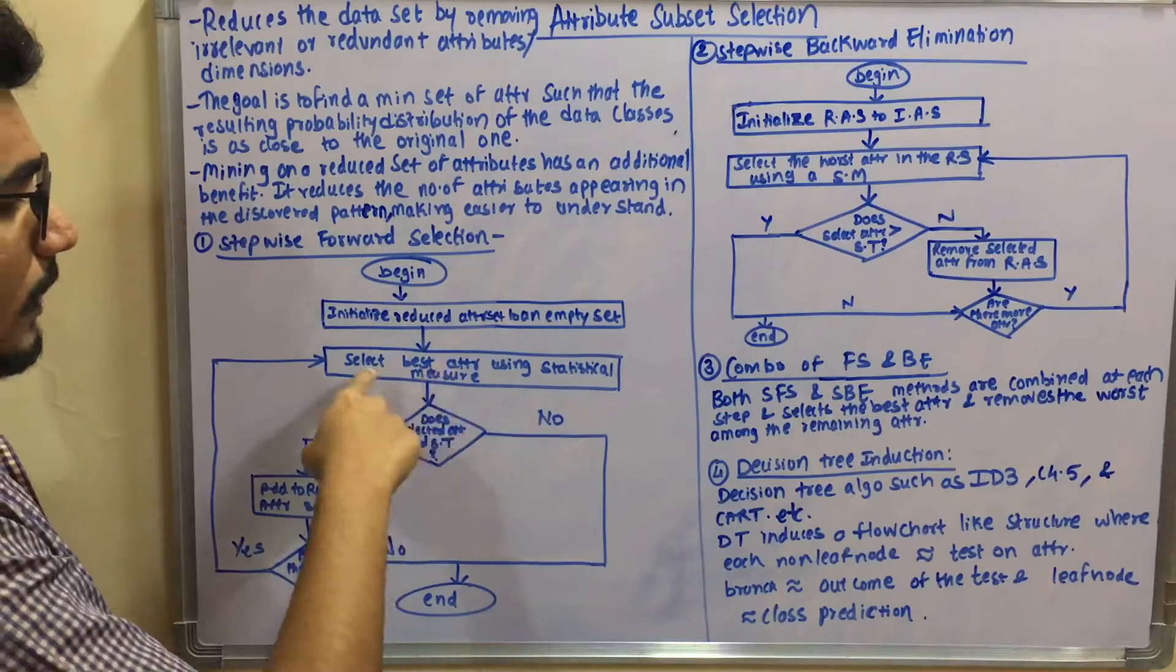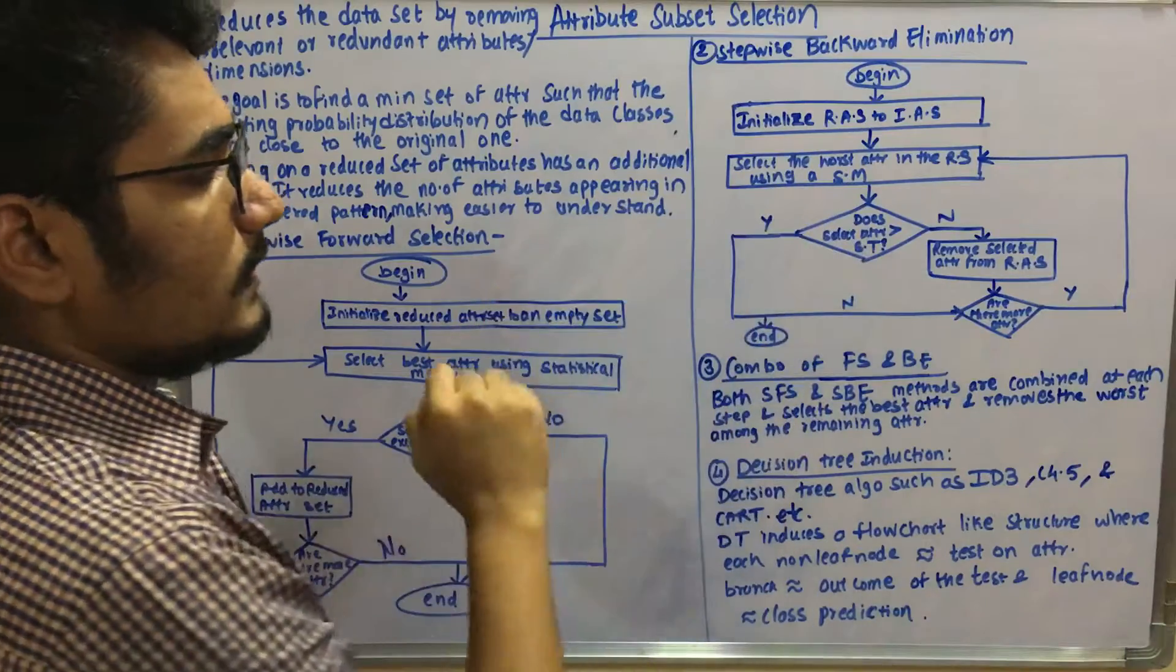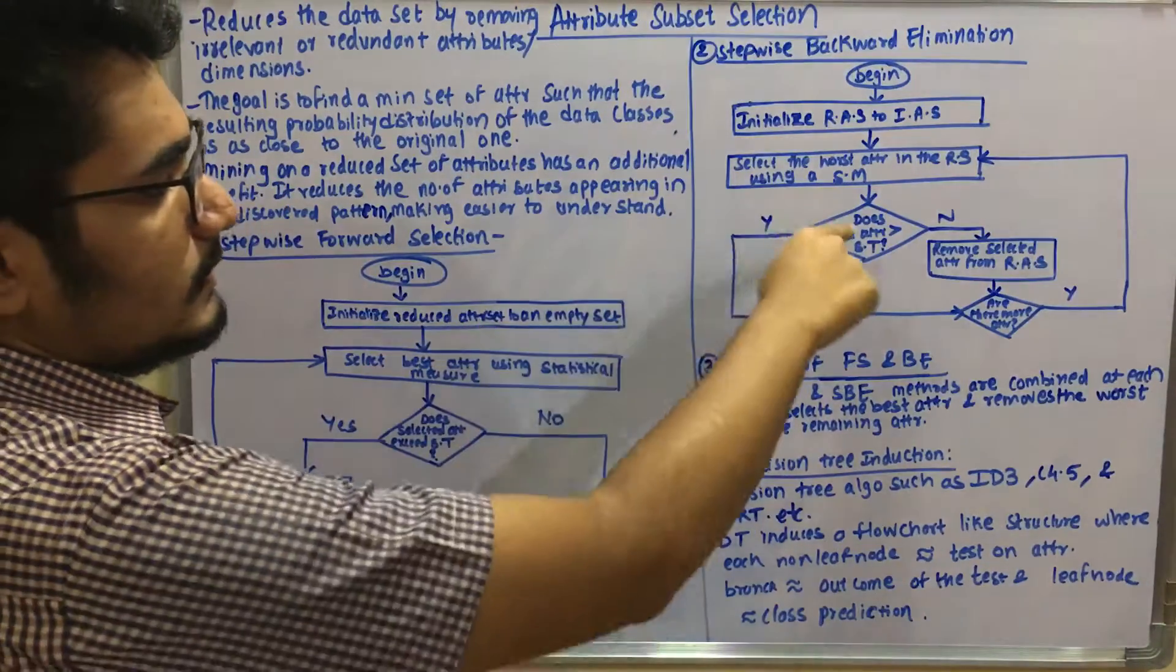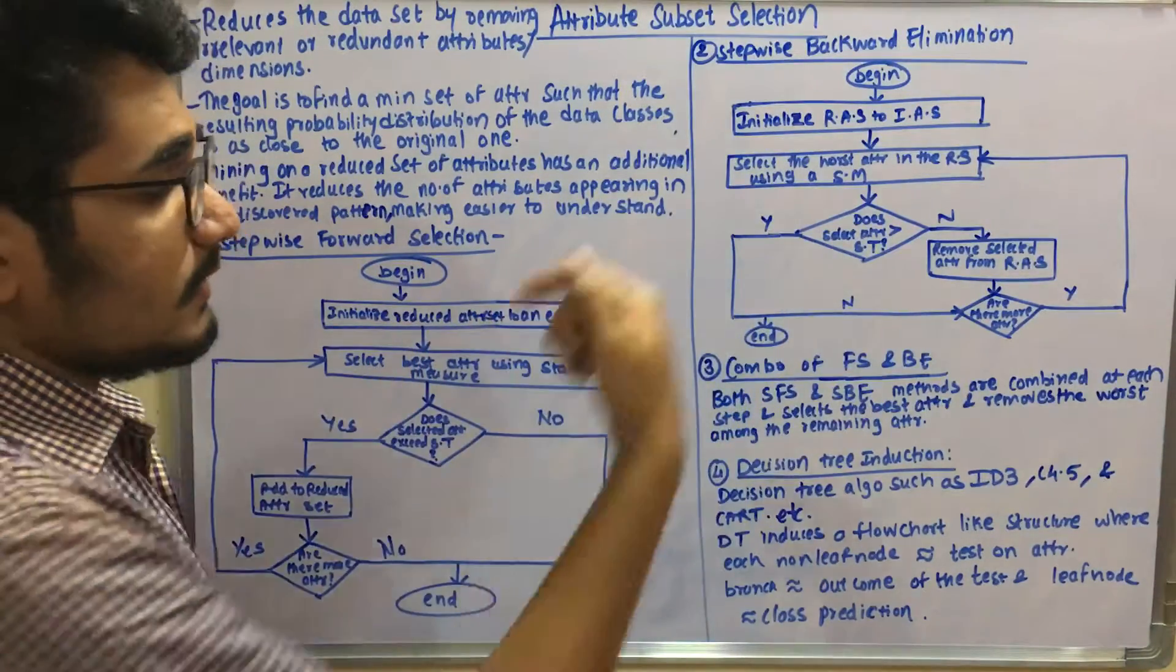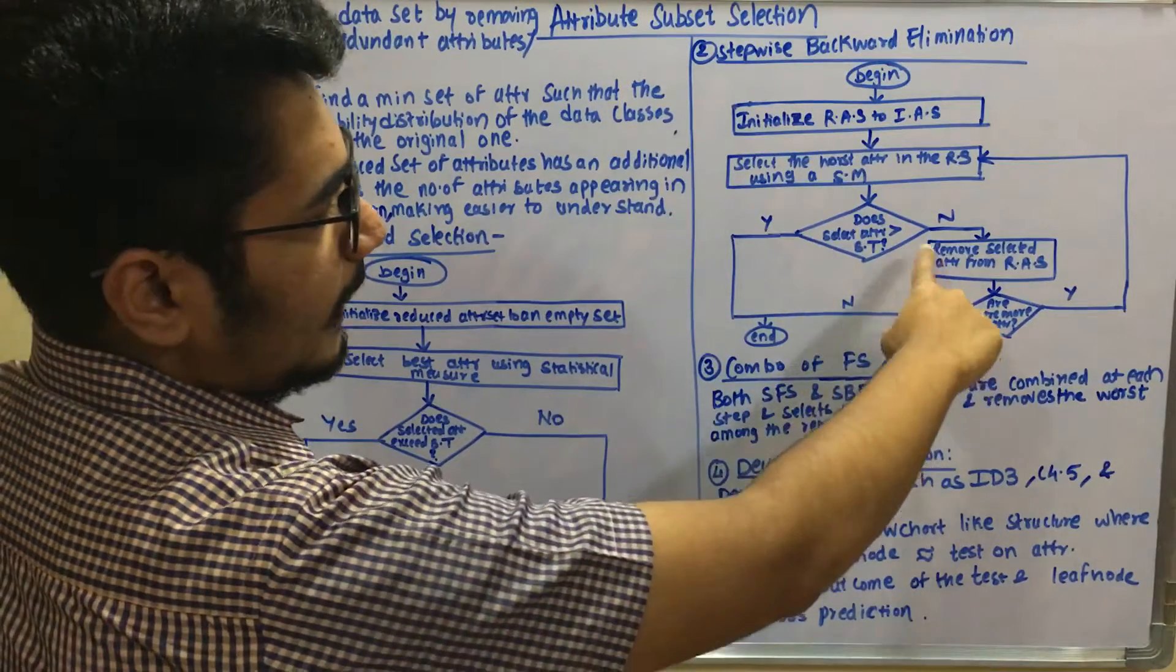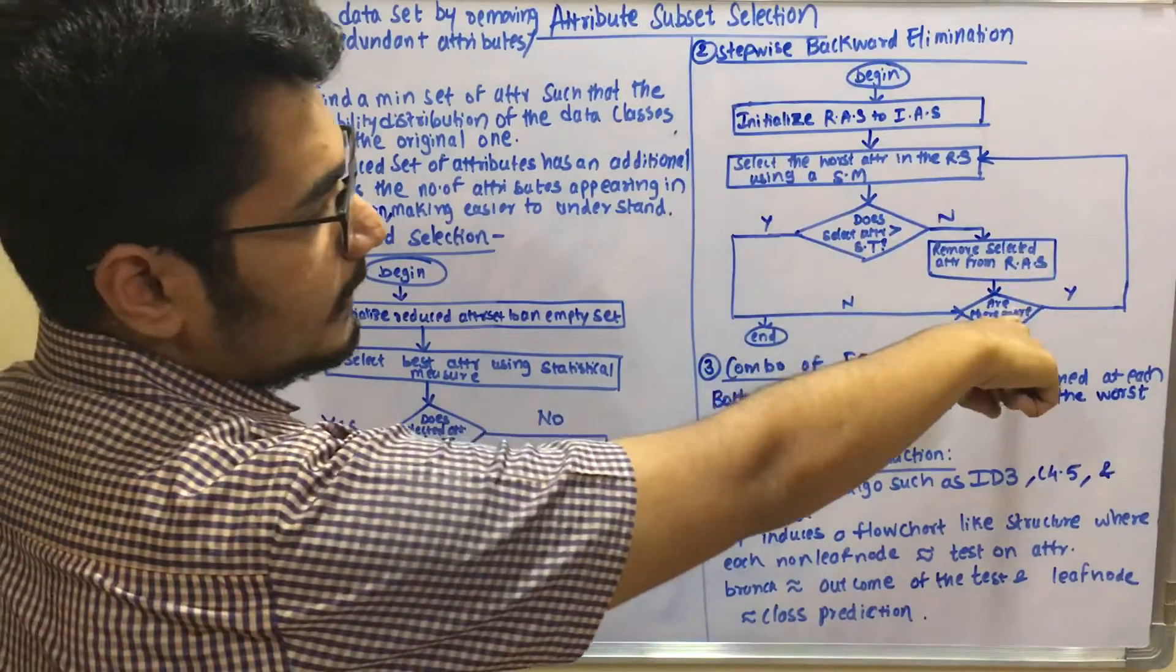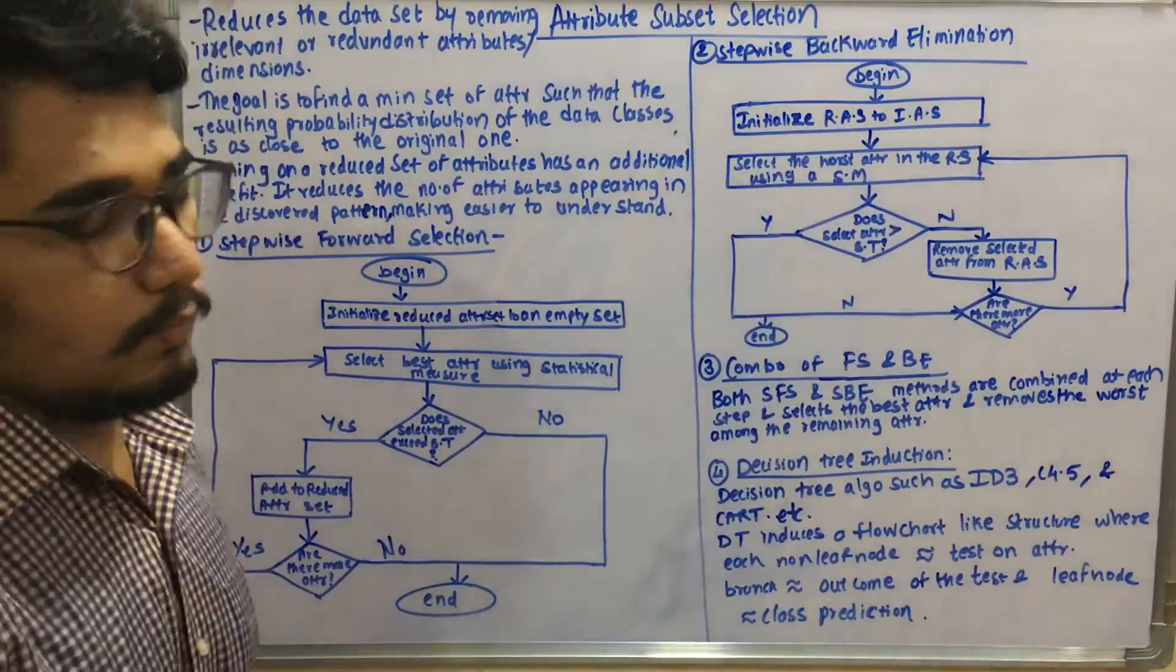Here you select the best attribute, whereas here you select the worst attribute from that. You check whether the selected attribute exceeds or is greater than the stopping threshold. If it's yes, it goes here. If it's no, then remove the selected attribute from the reduced attribute set, and it executes in a loop.